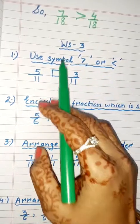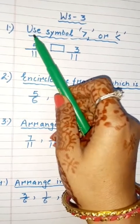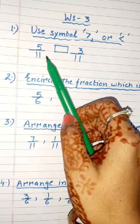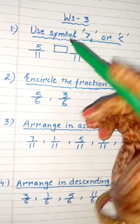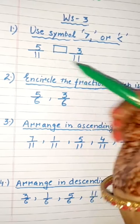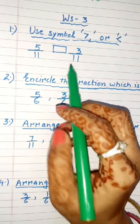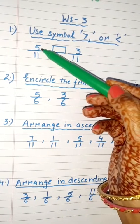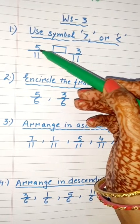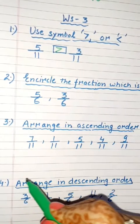Now let us do worksheet 3, question number 1. You have to use the symbol of greater than or less than. Here we have two fractions: 5/11 and 3/11. Both are like fractions, so we compare their numerators — 5 and 3. Since 5 is greater than 3, we write 5/11 is greater than 3/11.